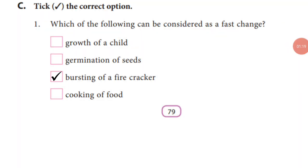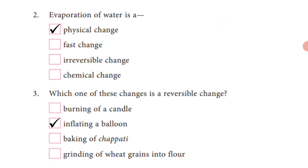C. Tick the correct option. First, which of the following can be considered as a fast change? Answer: C, bursting of a firecracker. Second, evaporation of water is a physical change. Third, which one of these changes is a reversible change? Answer: B, inflating of a balloon.